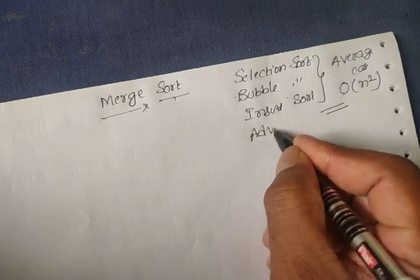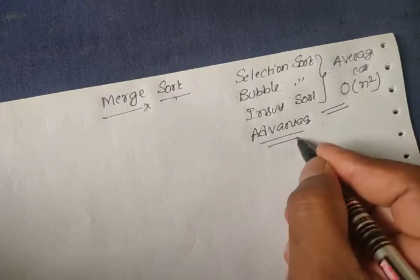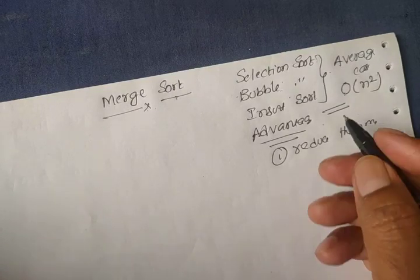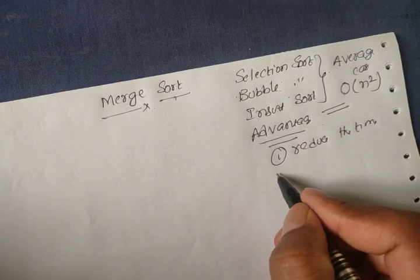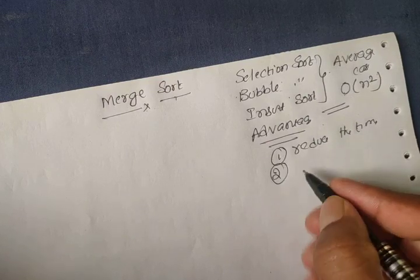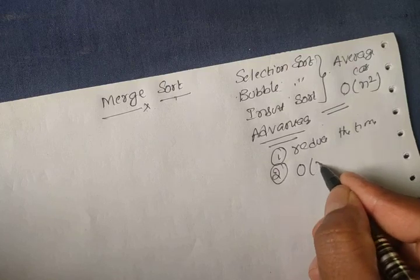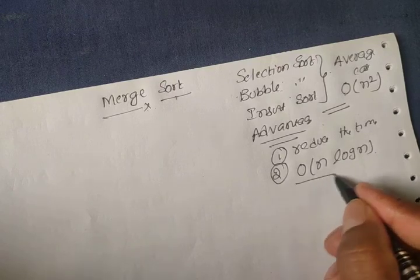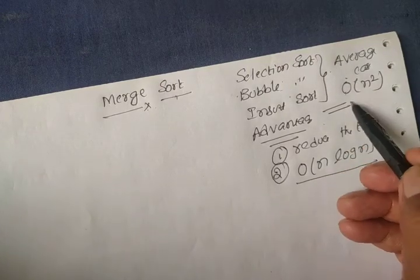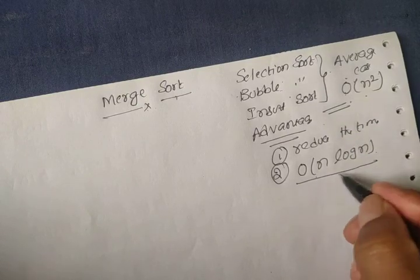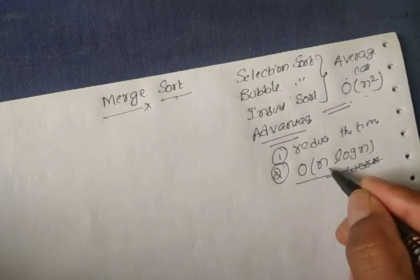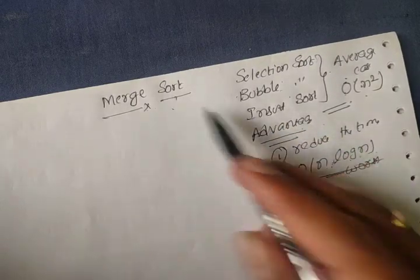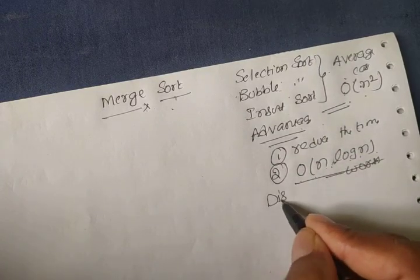By using merge sort, we can reduce the time. Even in the worst case, merge sort has a time complexity of O(n log n). Comparing this, that is one of the advantages of using merge sort.